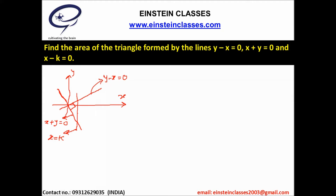These two lines are perpendicular to each other because the slope of one line equals 1 and the slope of the other equals minus 1, hence this is a right angle triangle. To find the area of this triangle we apply: area equals half base into height.